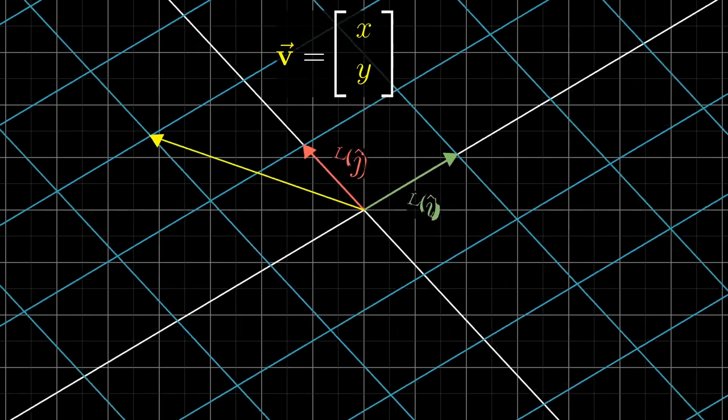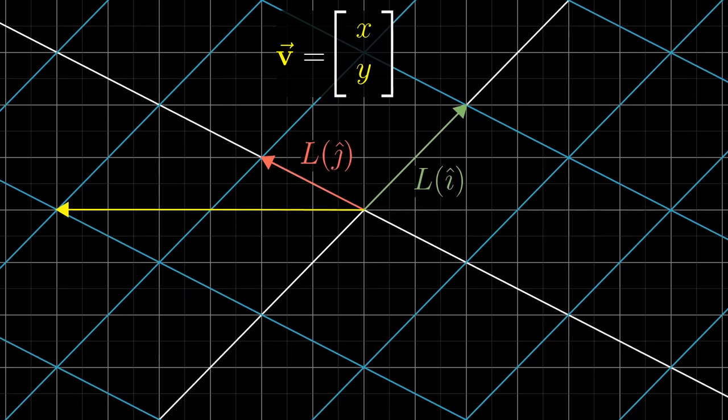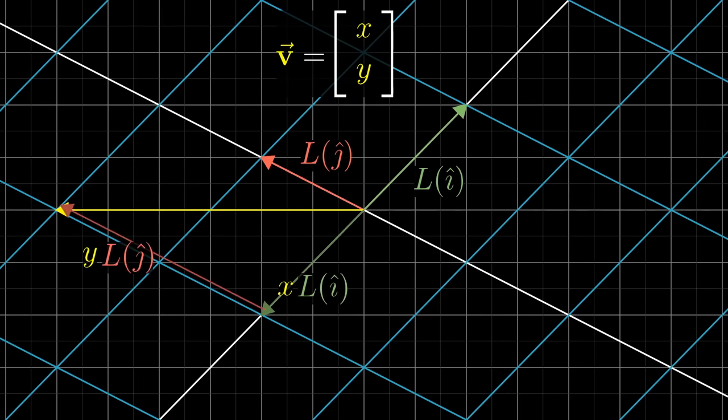After going through the transformation, this property that grid lines remain parallel and evenly spaced has a wonderful consequence. The place where your vector lands will be x times the transformed version of i hat plus y times the transformed version of j hat.